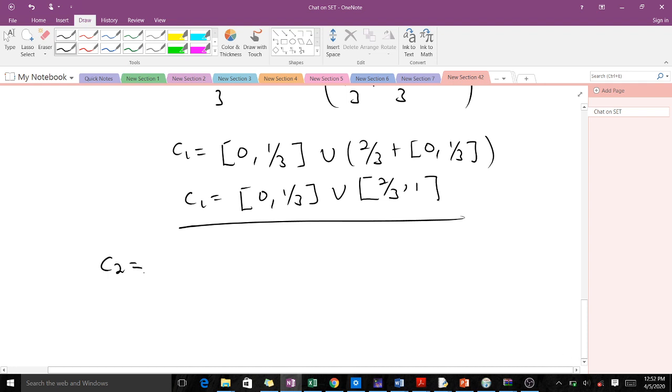To find C_2, we have C_2 = (1/3)C_1 ∪ (2/3 + (1/3)C_1).